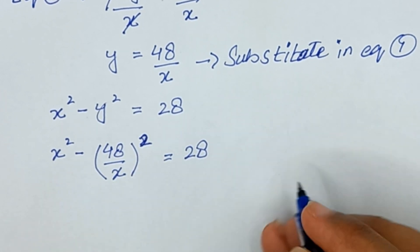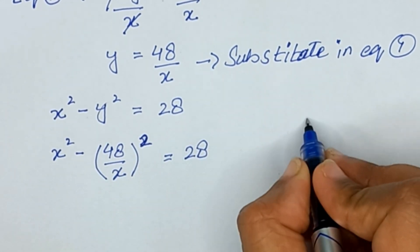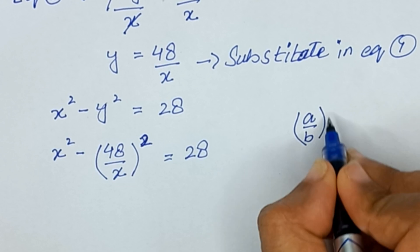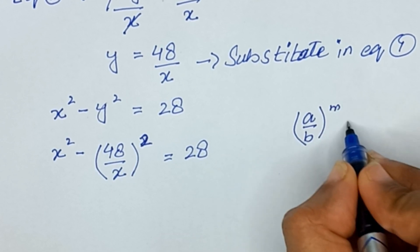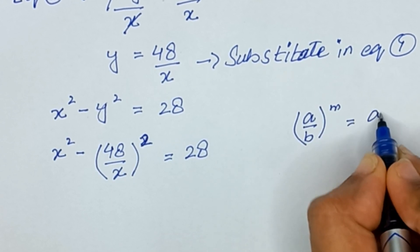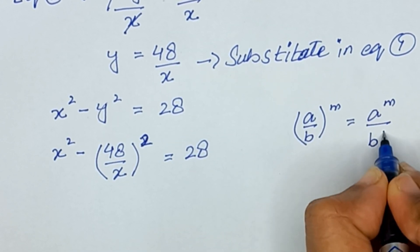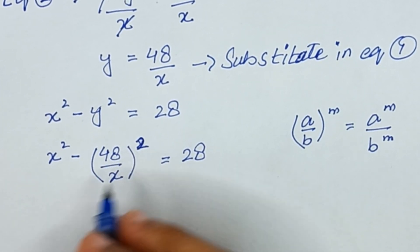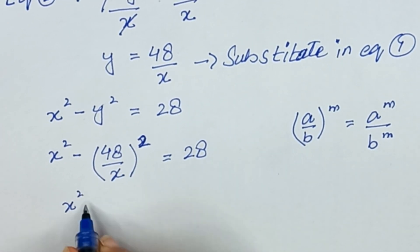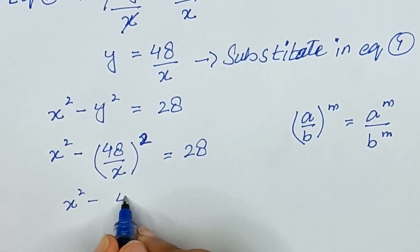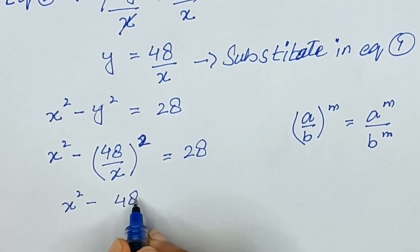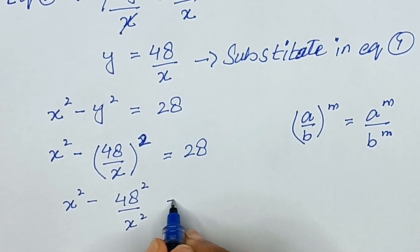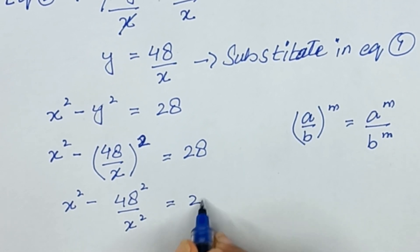Using the rule that (a/b)^m equals a^m divided by b^m, we can write this as x squared minus 48 squared divided by x squared equals 28.